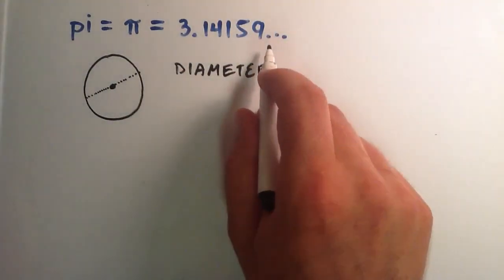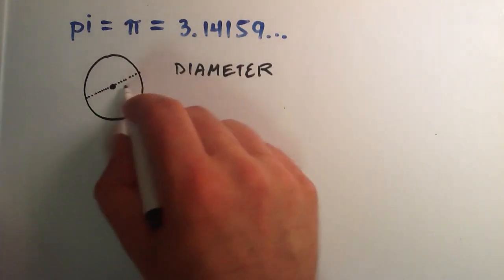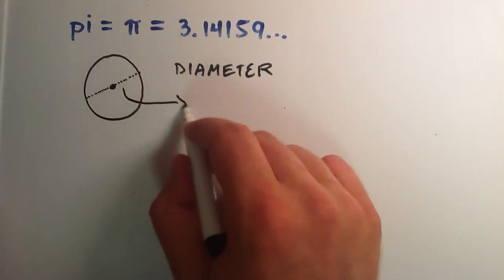What we want to do to find pi is we take this diameter and we just set it aside right here.